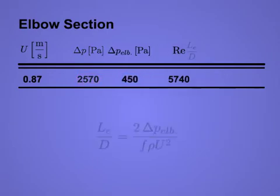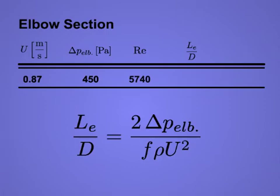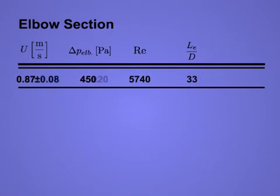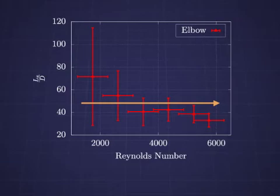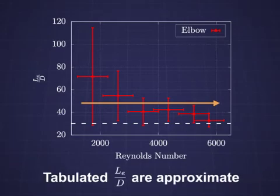Use this pressure drop with the friction factor and diameter of the straight sections to calculate the equivalent length for an individual elbow fitting. Propagate uncertainties for the Reynolds number and the equivalent length and plot your results. As the Reynolds number increases, the ratio of the equivalent length to internal pipe diameter approaches 30, as expected from the tabulated values. Note that the actual frictional resistance is specific to the fitting geometry, and so these tabulated values should only be considered as guidelines.